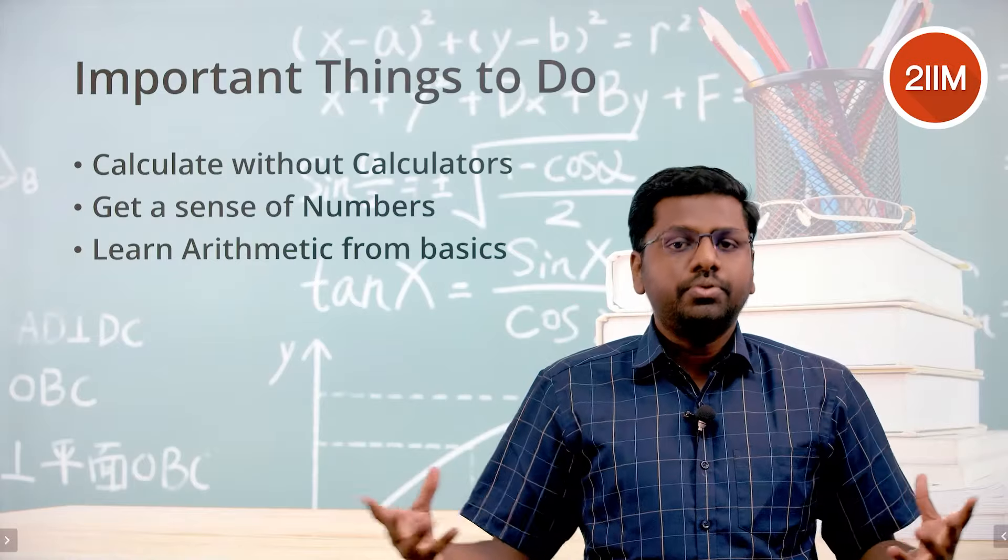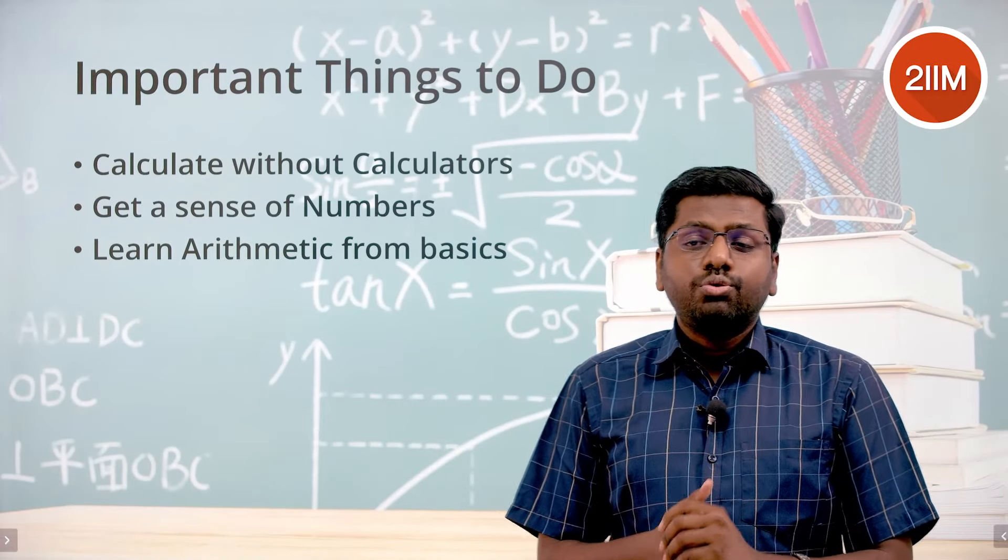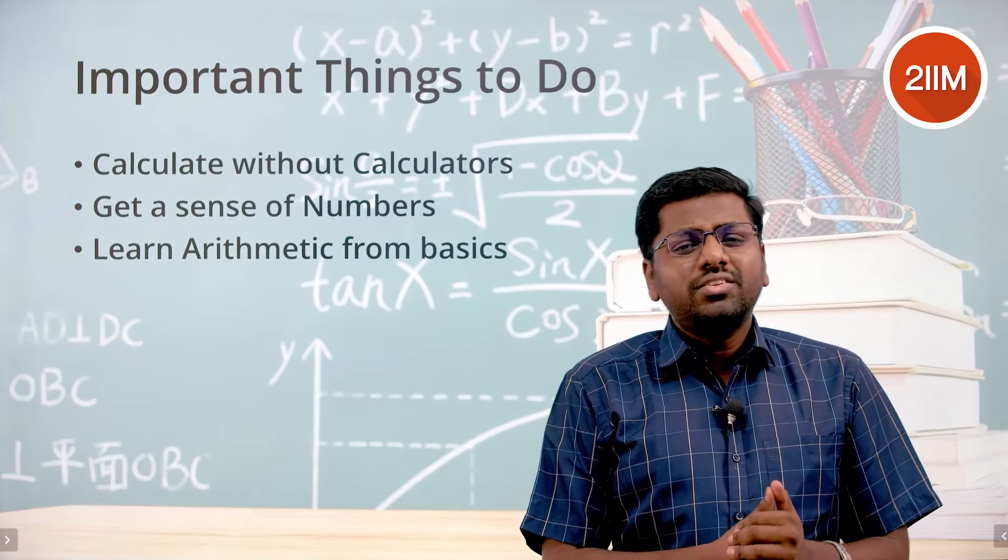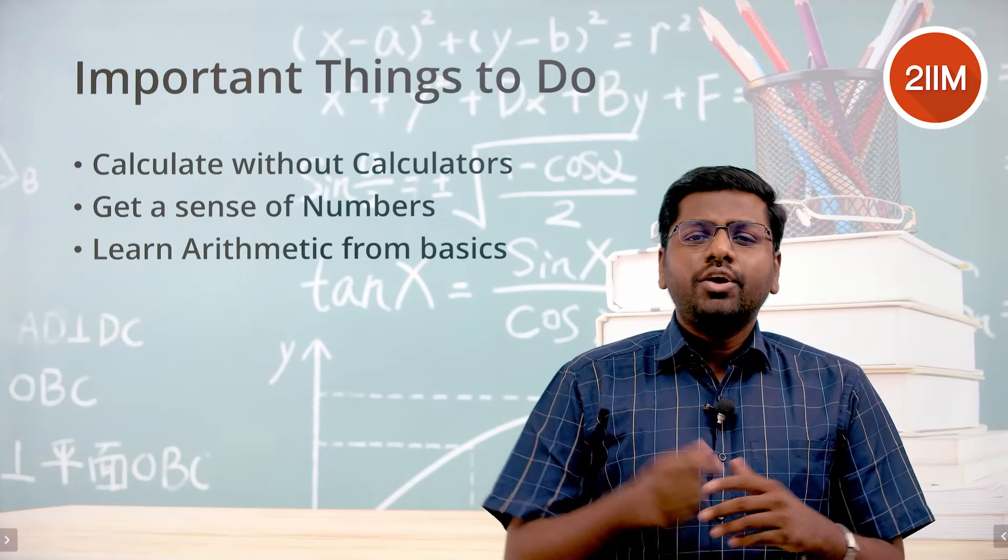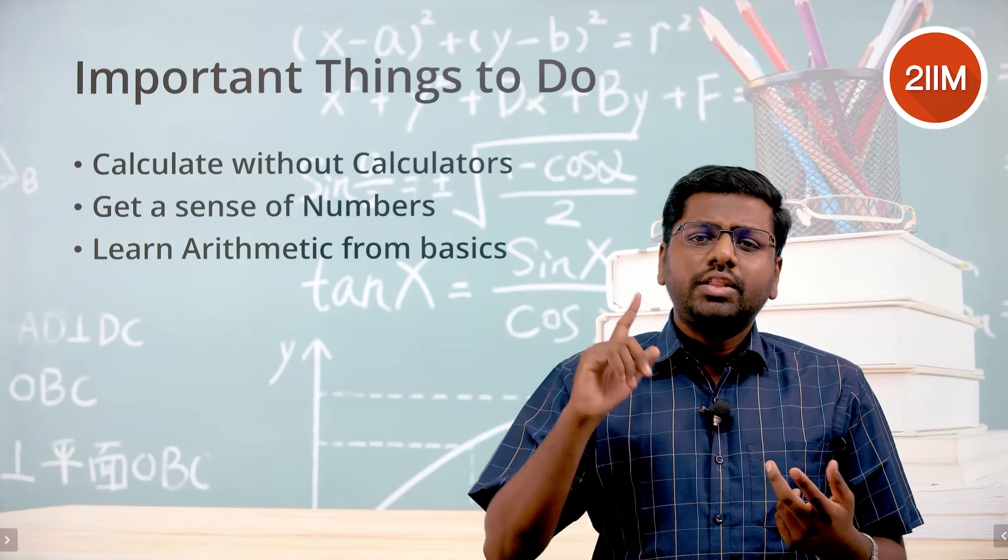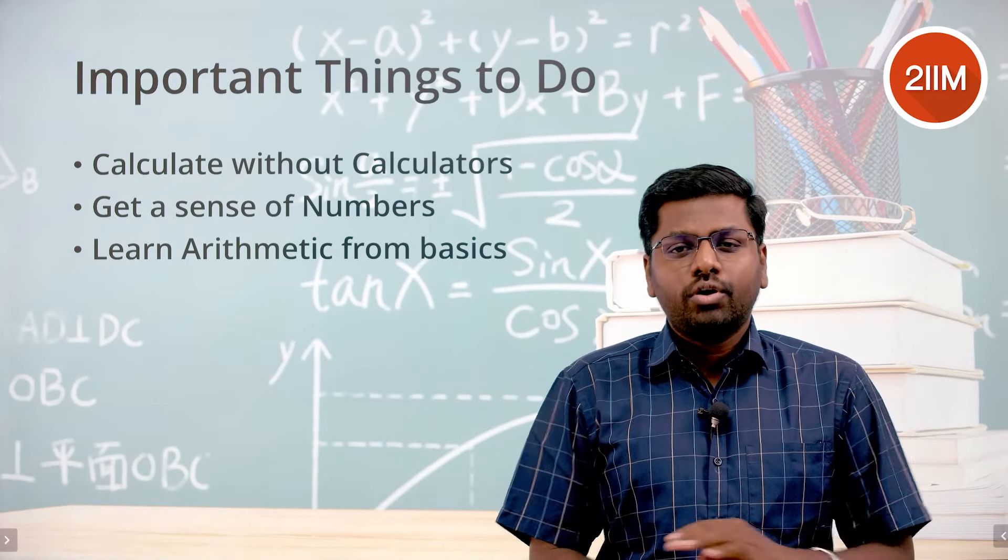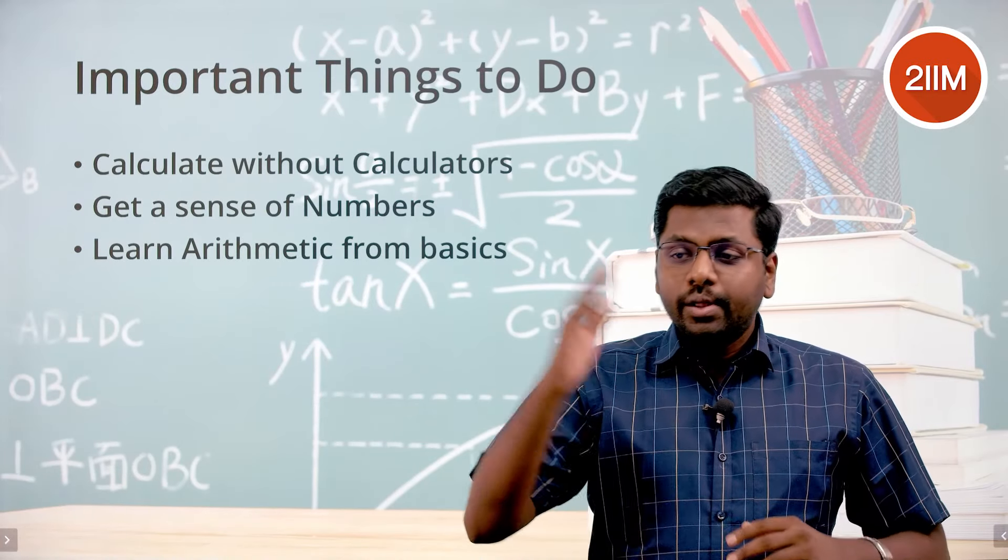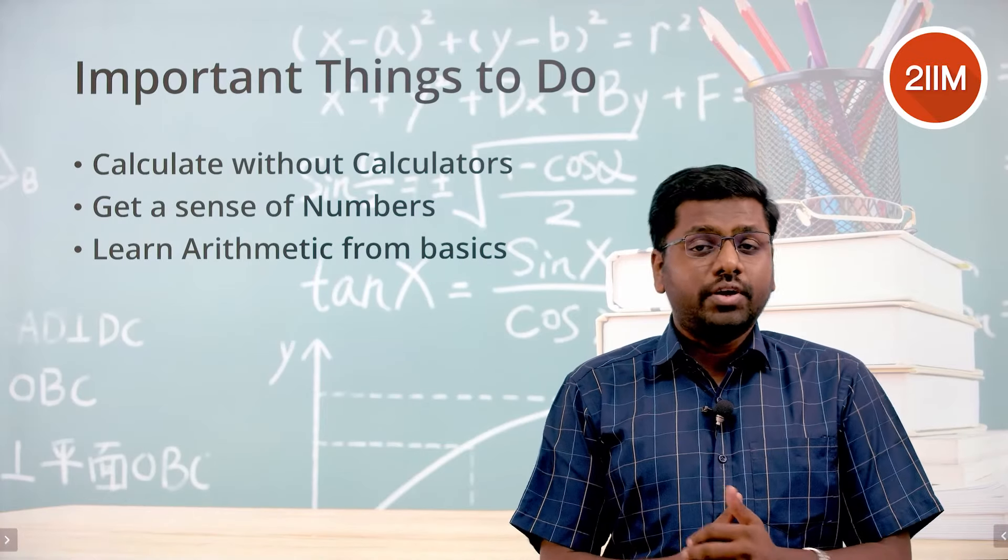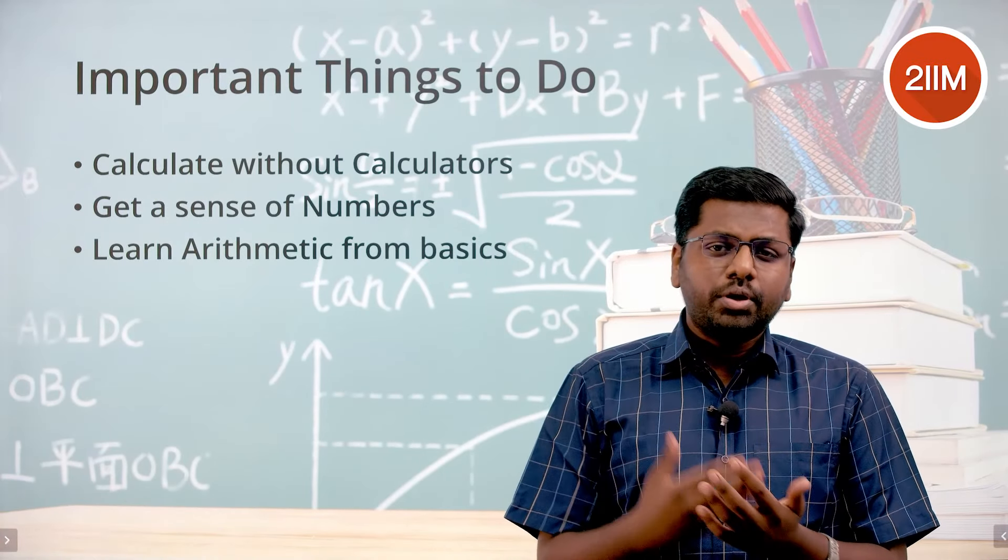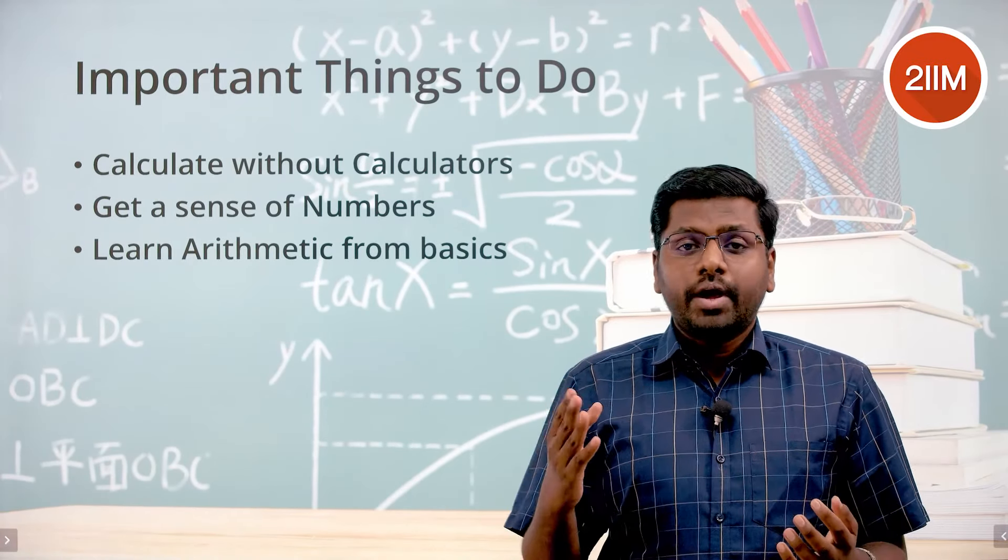So these are some of the pointers. Now once the first six months goes out, then you can do your geometry, then algebra, and then modern math. See what's the most you can make out of it, how well you can nail your actual CAT. All of that, your mocks, everything comes after the first six months, but the first six months are super crucial. However you are preparing, definitely solve a lot of arithmetic questions.